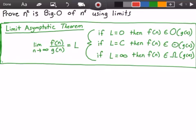Hey guys, and welcome to this video on Big O and limits. Here we want to prove that n squared is Big O of n to the power of 6 using limits, and in the green rectangle here I have the limit asymptotic theorem that we're going to use to prove this.